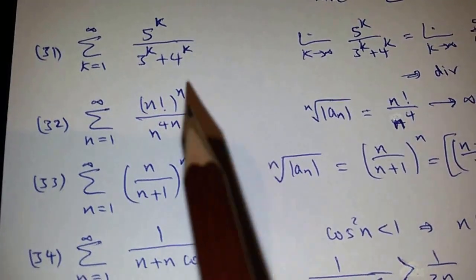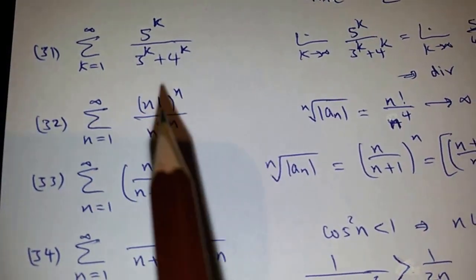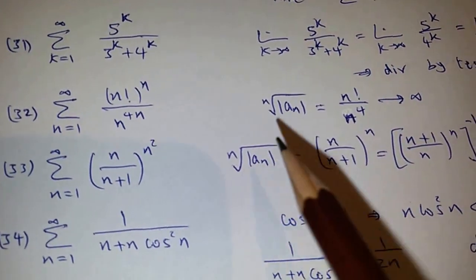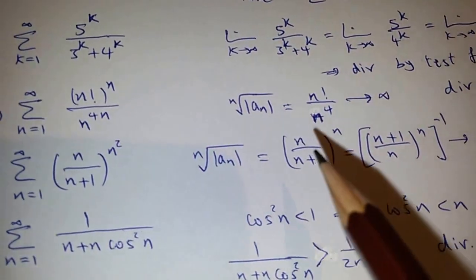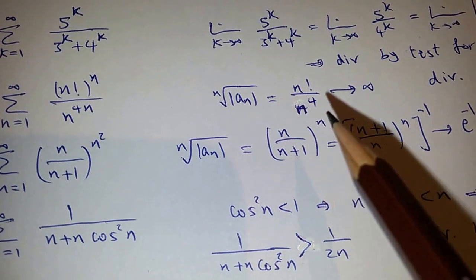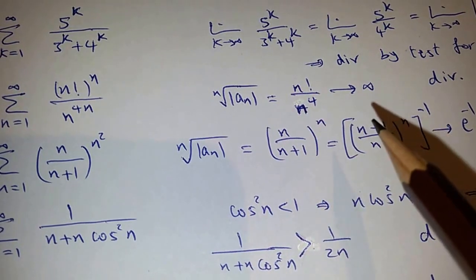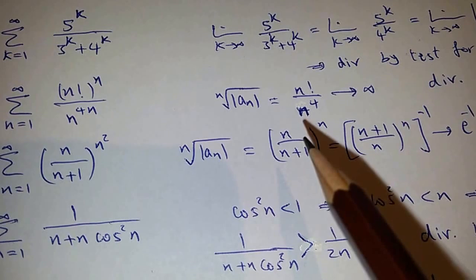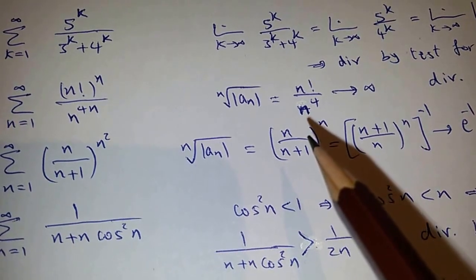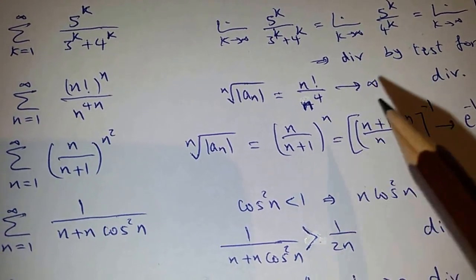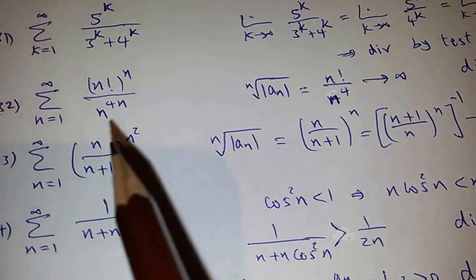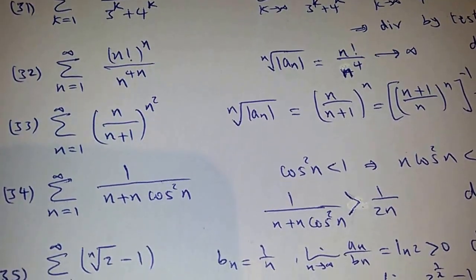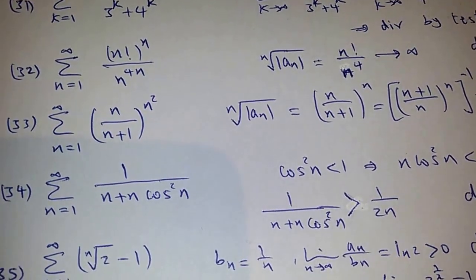This is a good candidate for the root test because you have power n. If you use the root test, you will find that the limit goes to infinity because n! grows much faster than n^4. So it goes to infinity, and this is divergent by the root test.